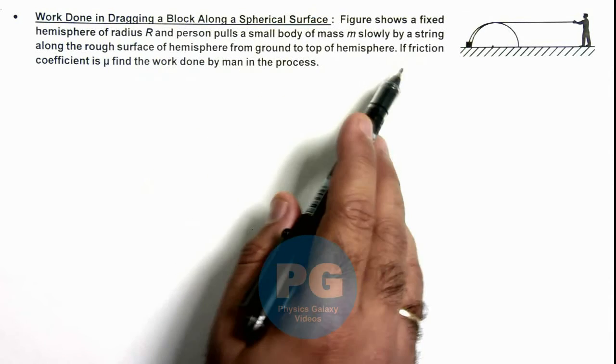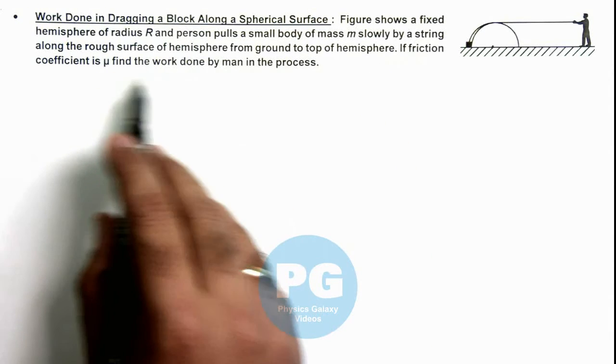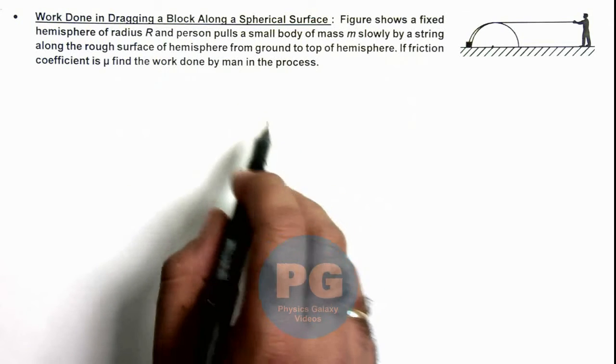Here it is saying if friction coefficient is mu, we are required to find the work done by the man in the process.